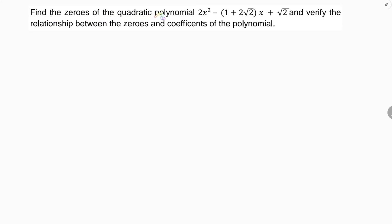Find the zeros of the quadratic polynomial 2x² minus (1 plus 2√2) times x plus √2, and verify the relationship between the zeros and coefficients of the polynomial. To find the zeros, I'll take the polynomial and equate it with 0.